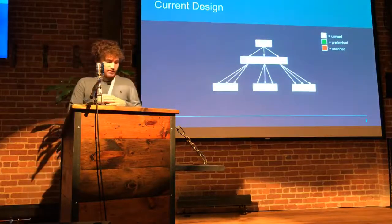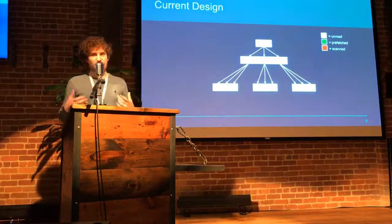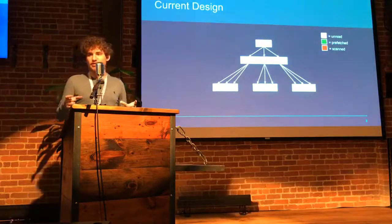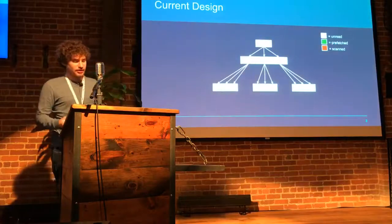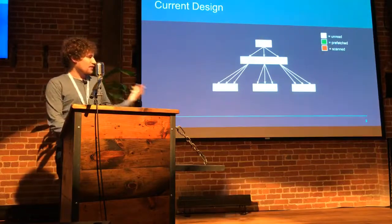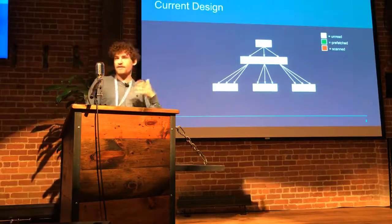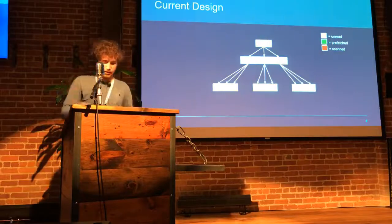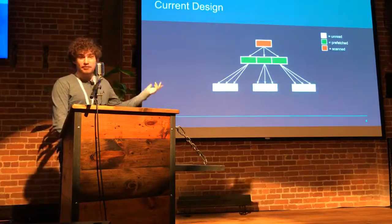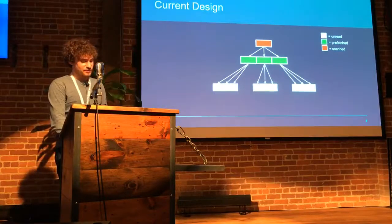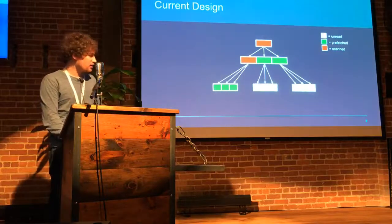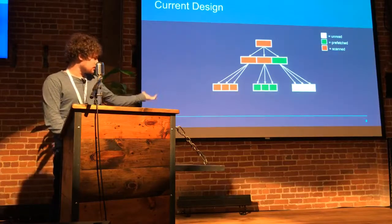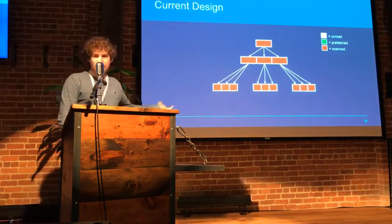This is a talk about prefetching as we're scanning through this — how can we make this scanning through a single object set faster? Currently, everything that's gray is stuff we haven't read yet, everything that's green is stuff that we've prefetched, and everything that's red is stuff that we actually scanned and scrubbed or resilvered. The first thing we do is read the top-level block, and then we immediately prefetch all of the blocks underneath that. After that, it's depth-first search — goes down, prefetches the blocks below that, scans each one, does the scrub, and continues. So this is how it currently works.